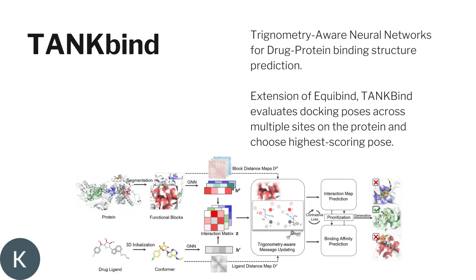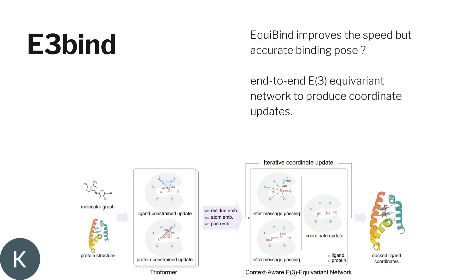TANKBIND is the subsequent method of UQBIND — or you can say it is a further extension — which is based on trigonometry and neural networks to find drug-protein binding. It evaluates the docking process across multiple sites on the protein and chooses the highest scoring pose. As you can see in the figure, it predicts the binding site across those multiple sites.